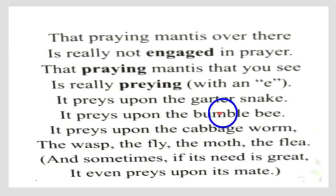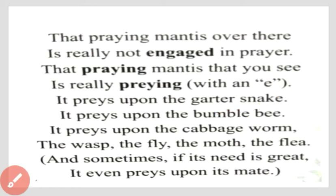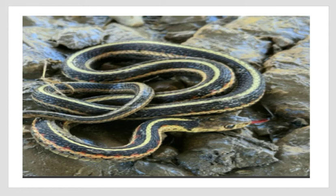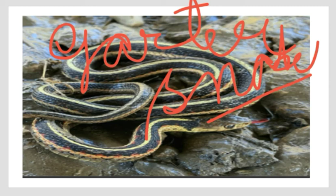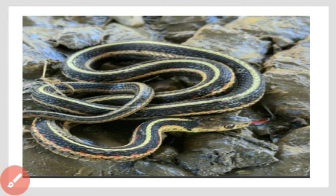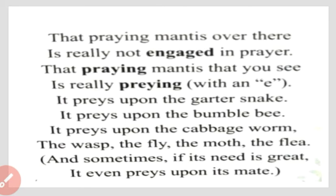It preys upon the garter snake and the bumblebee. A bumblebee is called 'bhaura' in Hindi. The garter snake — spelled G-A-R-T-E-R S-N-A-K-E — is a green and yellow colored snake found in America. In our region, it is called 'hara saanp' because it is green in color with a yellowish tinge.